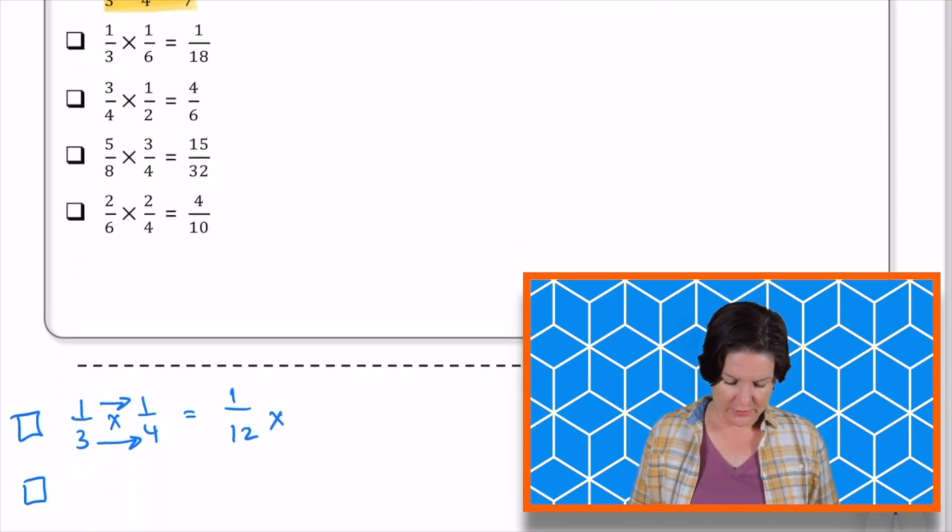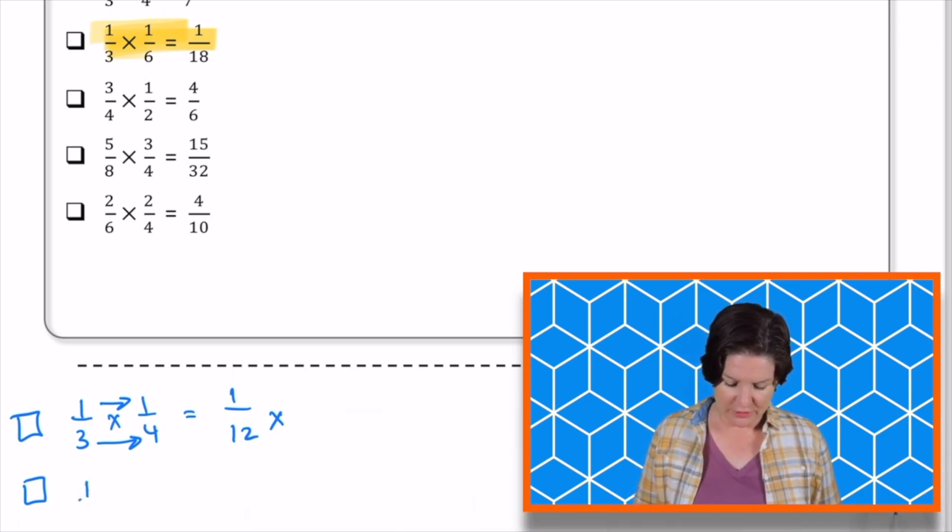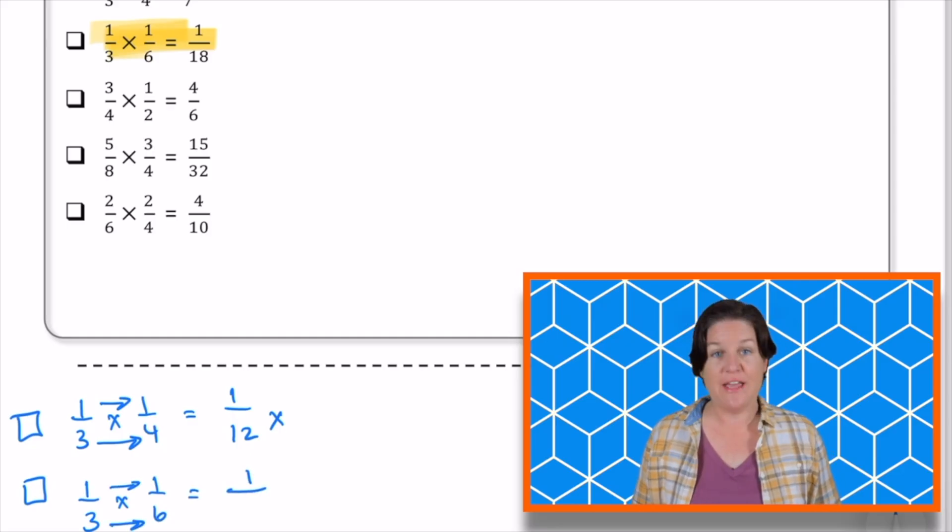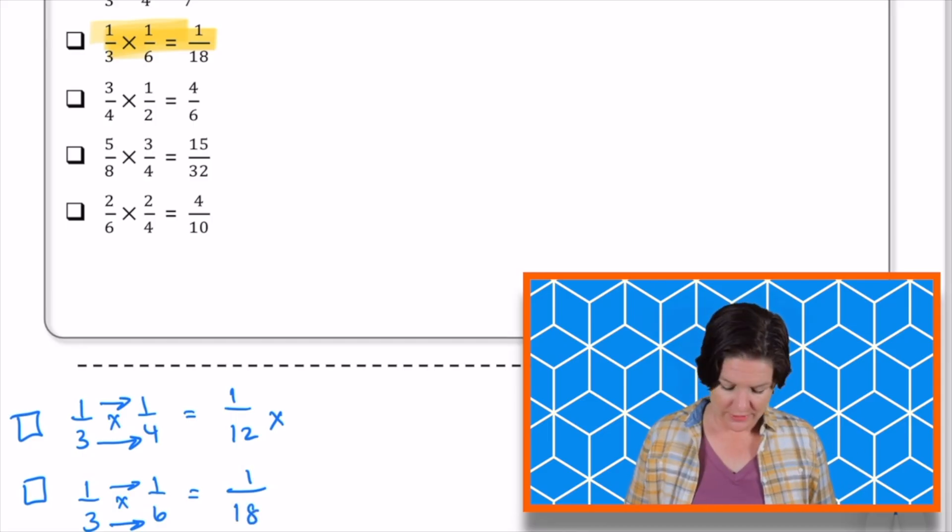Okay, next. Next up, we've got 1/3 times 1/6, is that 1/18? Let me bring it on down to try it. So multiplying the numerator, I would get 1. Multiply the numbers in the denominator, that would be 18. Yes, that is a correct answer, so I'm going to go ahead and mark that one.